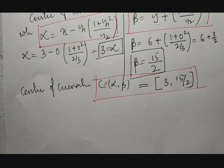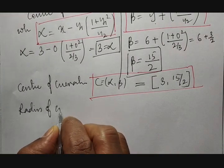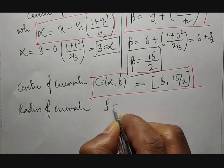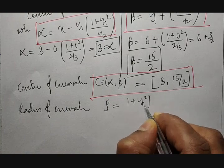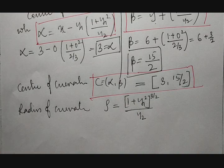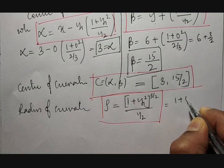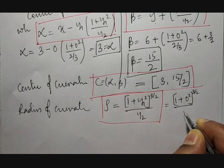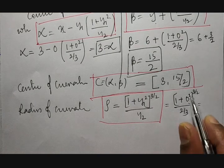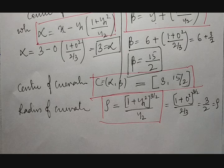Now we need to obtain the circle of curvature, but first we calculate the radius of curvature. ρ = (1 + y₁²)^(3/2) / y₂ = (1 + 0²)^(3/2) / (2/3) = 1 / (2/3) = 3/2. So ρ = 3/2.